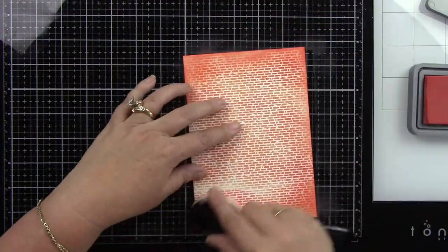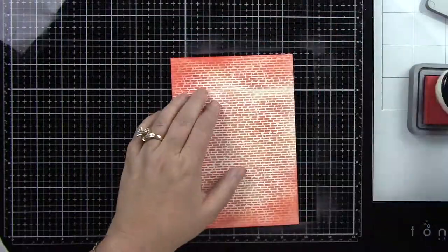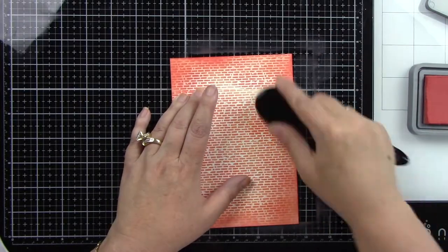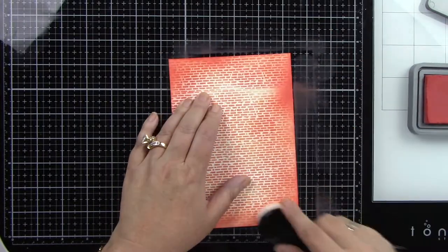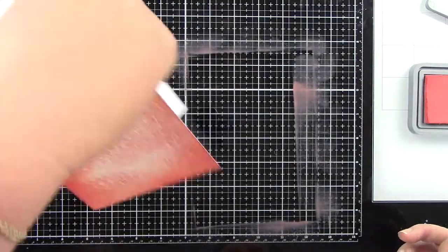I'm using the Fired Brick around the edges. I'm actually going to come in a little bit later and add some Black Soot to it just to kind of tone down how red that is.